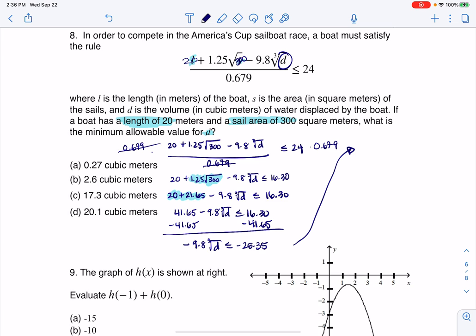Let me move this up here. All right, so let me rewrite this. I had negative 9.8 cube roots of D has got to be less than or equal to negative 25.35.